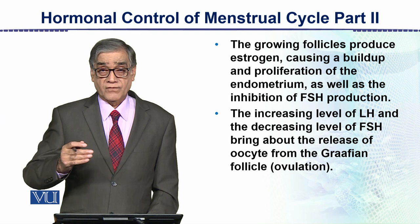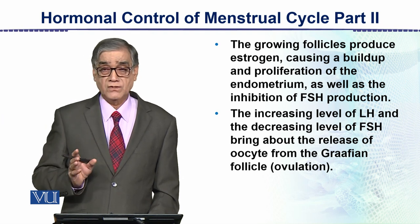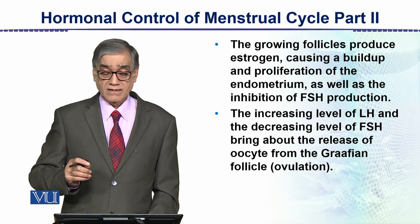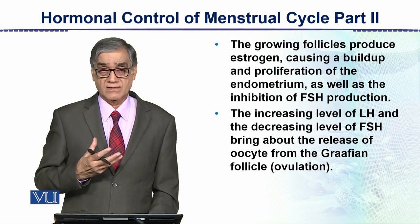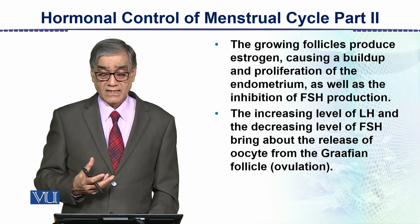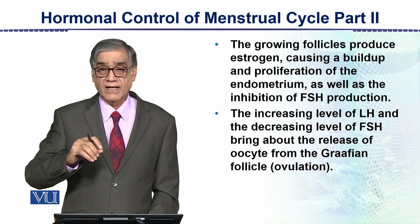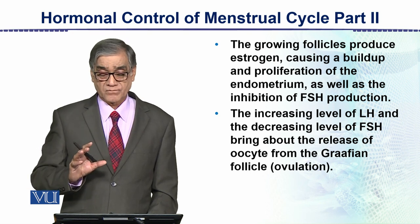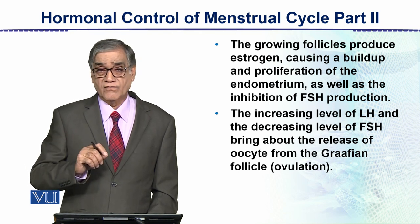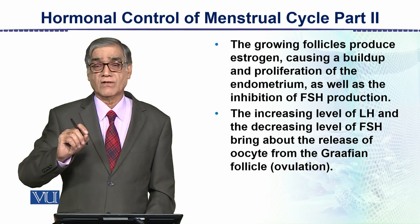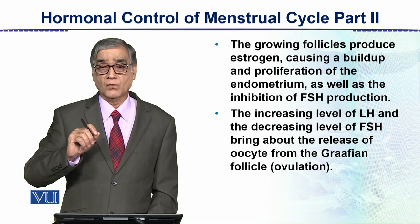The next phase is very important. The increasing level of LH — the luteinizing hormone — and the decreasing level of FSH act as a stimulus. This stimulus stimulates the graafian follicle to break and to release the oocyte. So decreasing FSH and increasing LH together stimulate the ovulation process.